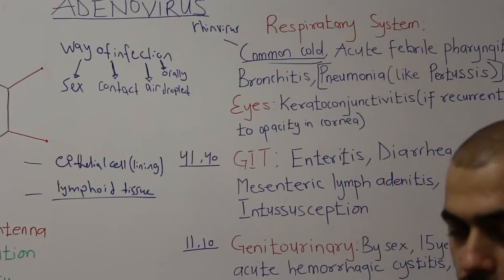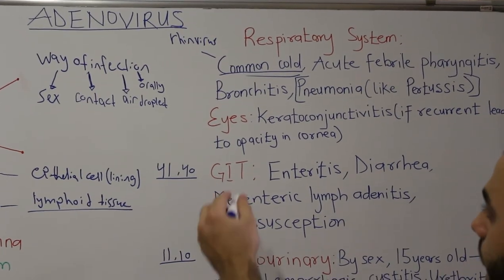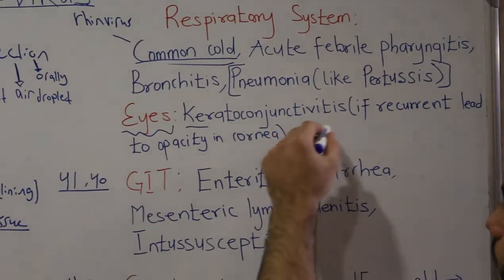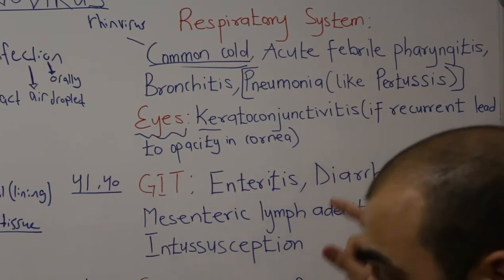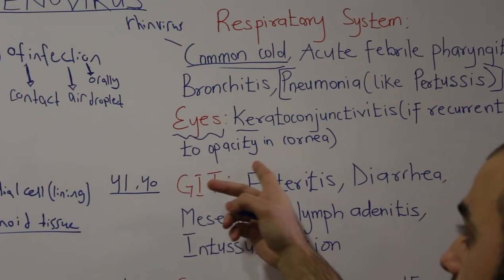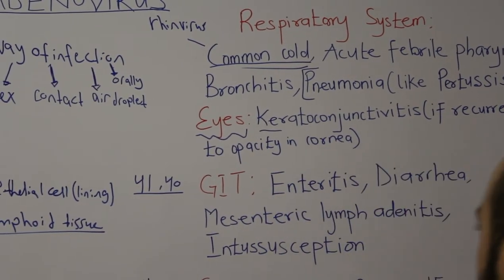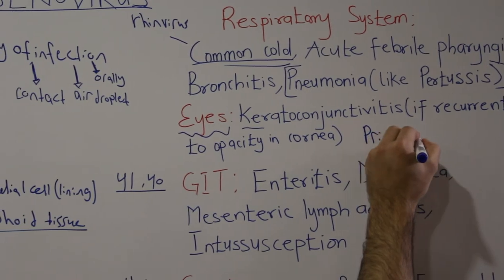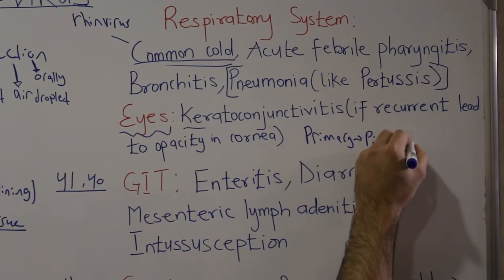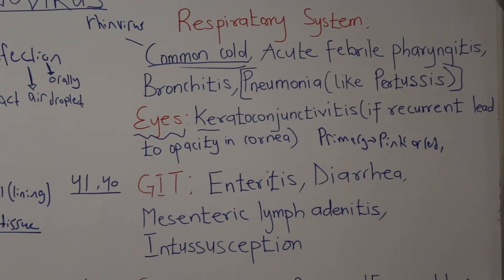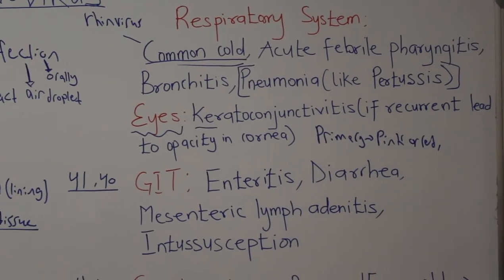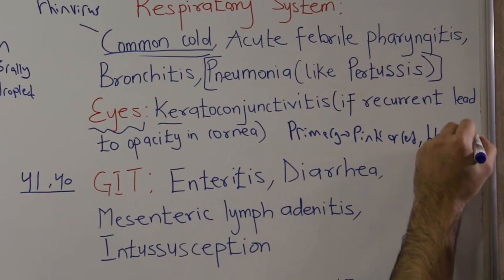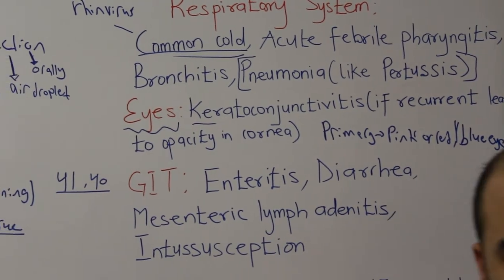For the eye: the virus can enter the conjunctiva through contact with contaminated water or hands, causing keratoconjunctivitis. If contact is recurrent it may lead to corneal opacity. On primary contact the cornea appears pink or red. In humans recurrent infection is less common, but in animals repeated infection causes a blue eye appearance due to corneal opacity.